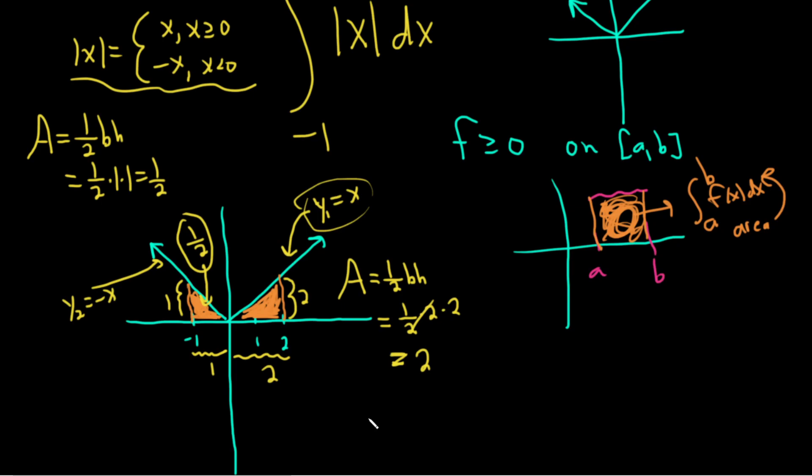So to find the definite integral, let's be really pro and write it again like pros do. It'd be the first area plus the second area. So the first area is one-half, and the second area is two.